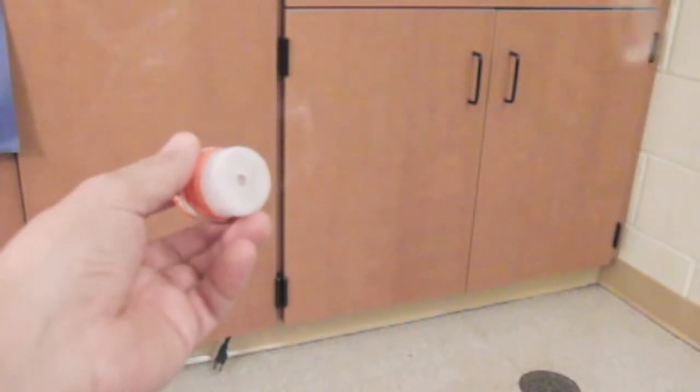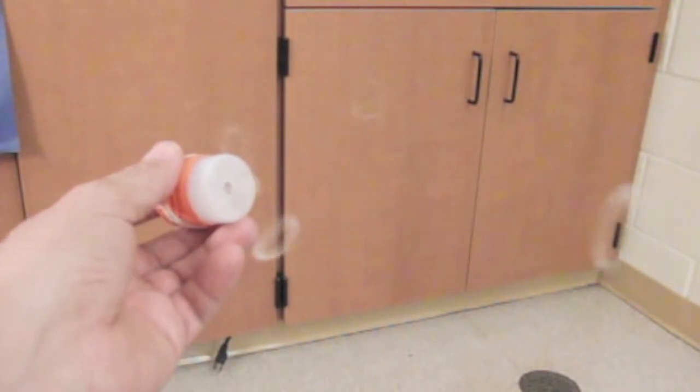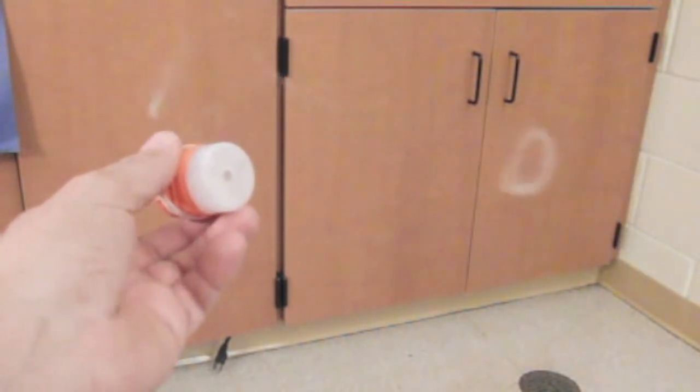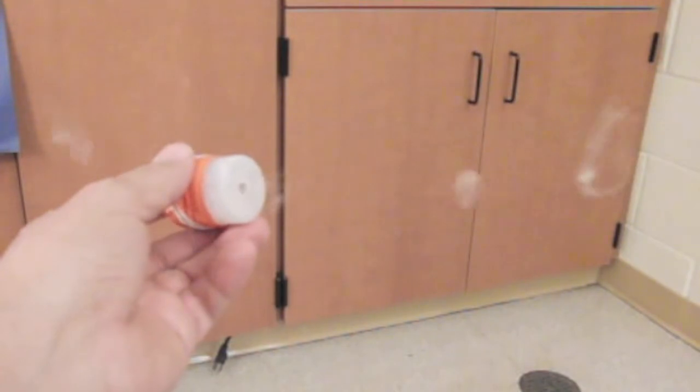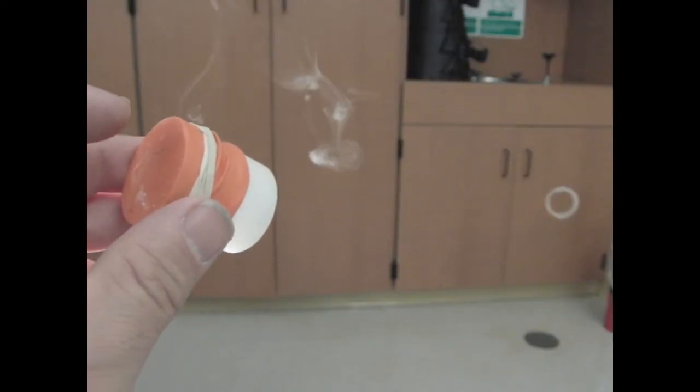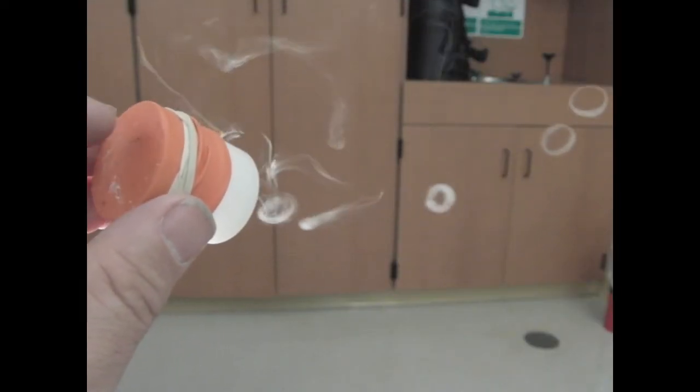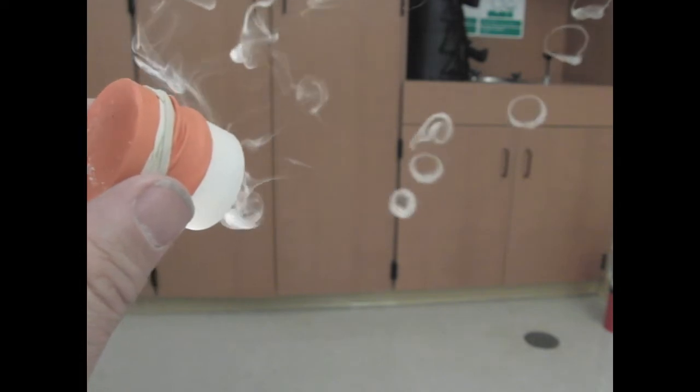Now let's drop down to a quarter inch. Now the camera is deceiving. It's actually making these rings look a lot bigger than what they actually are. And while it looks like I'm shooting them a lot further, they're actually only traveling about six inches away from the container.